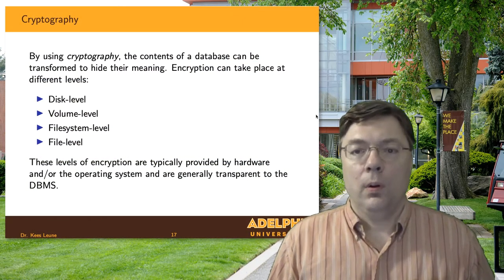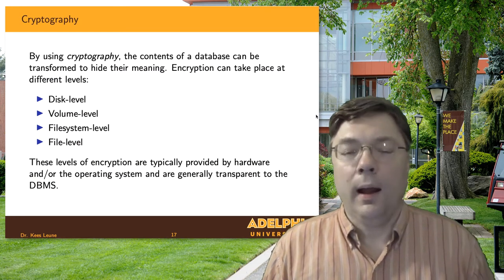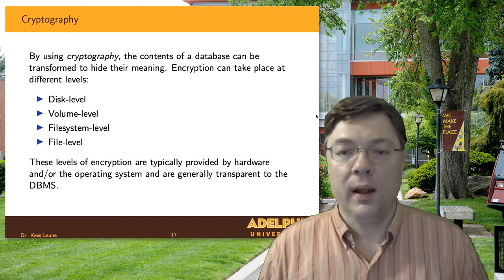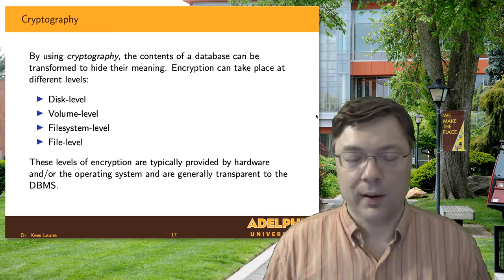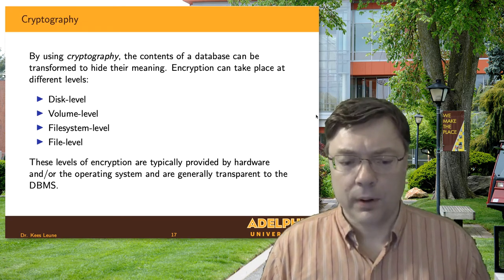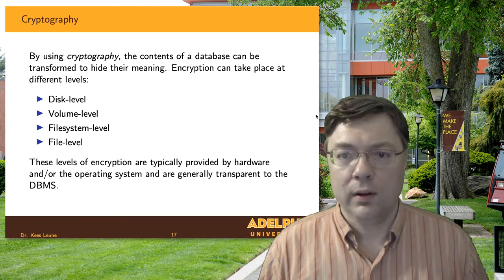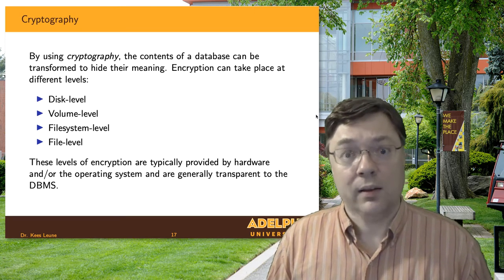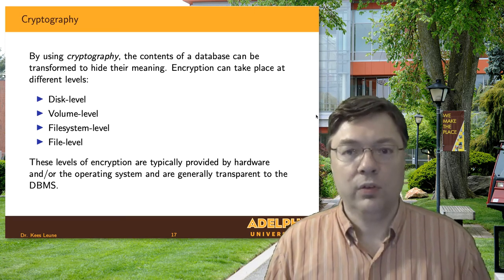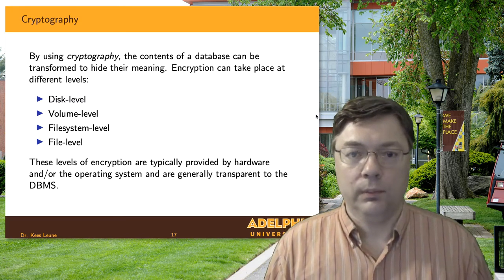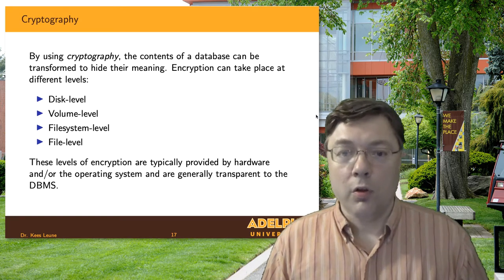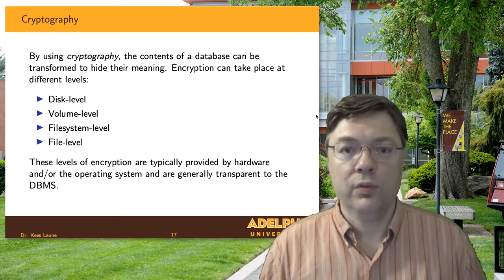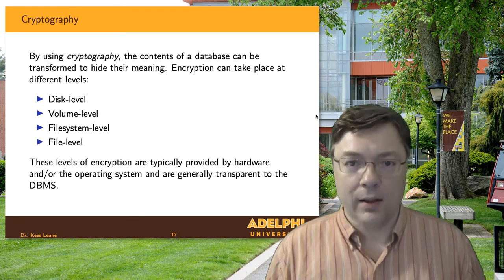First, let's quickly define what encryption is. Encryption is really no more than a transformation of data from a comprehensible format to an incomprehensible format. Basically, we can take meaningful data — for example, a social security number — and change it in such a way that if someone looks at that changed data, it makes absolutely no sense and the social security number is not recoverable. Unless, of course, you have the magic sauce, which in terms of encryption means you need to know what encryption algorithm was used and, more importantly, what key has been used.